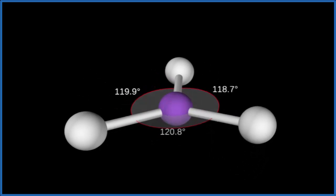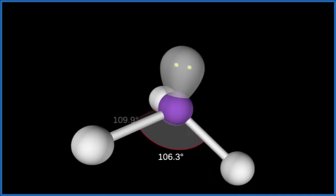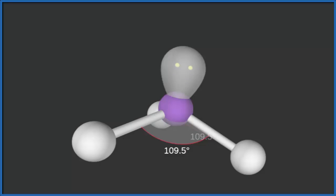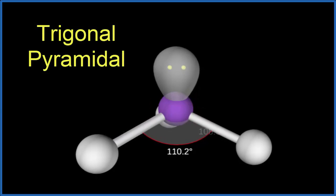But remember that lone pair we had there. We need to put that in. We put our lone pair in. And that forces all these atoms here down, these chlorine atoms down. And that gives us what we call a trigonal pyramidal molecular geometry.